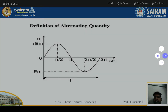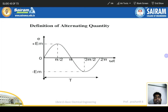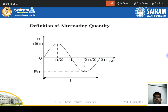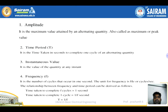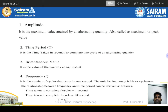Definitions of AC quantities: time period — time taken to complete one cycle; frequency — number of cycles per second; maximum or peak value — the maximum value of the alternating quantity; instantaneous value — the value of the alternating current at a particular instant; amplitude — the maximum peak value of the alternating quantity.